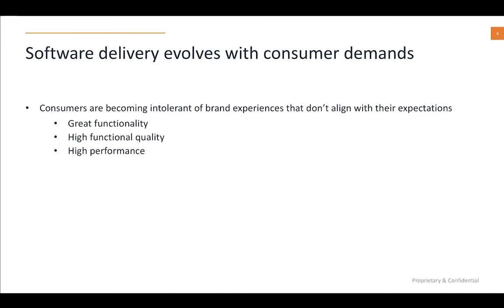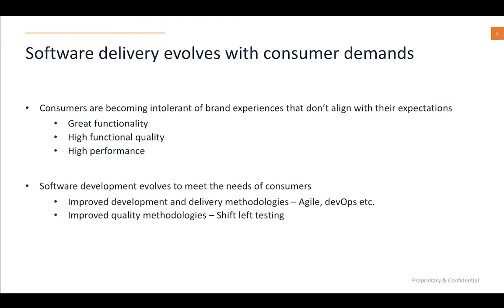Software product teams have always done their best to adopt and adapt with the growing needs of consumers. They've adopted methodologies to deliver applications faster — for example, with Agile and DevOps, the whole point is to deliver new enhancements and fix existing issues much faster and release them to market. There's also been interesting new testing methodologies like shift-left testing, which advocates testing much earlier in the development cycle and making QA the central focus of development and delivery.